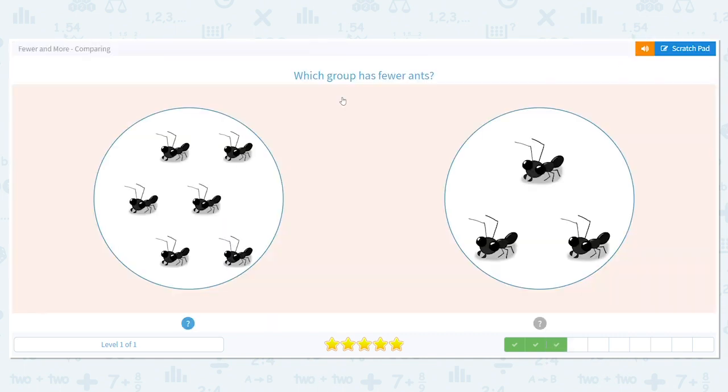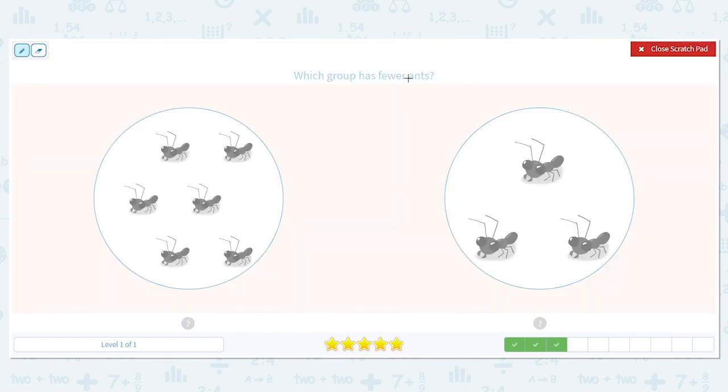Let's do another one. Which group has fewer ants? I'm going to circle that fewer again to help us out. I circle it to make it stick out. Okay, how many ants do we have on this side? Count with me. One, two, three, four, five, six. We have six.